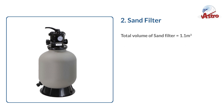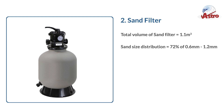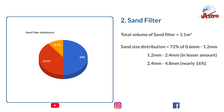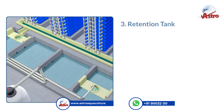Sand filter — total volume of sand filter: 1.1 cubic meters. Sand size distribution: 72% of 0.6mm to 1.2mm, 1.2mm to 2.4mm in lesser amount, 2.4mm to 4.8mm nearly 16%. Use pie chart to show sand distribution.